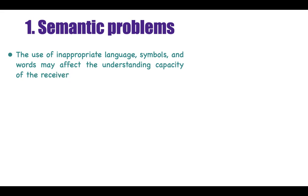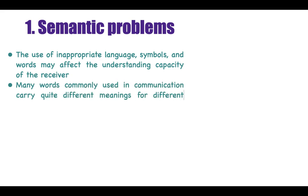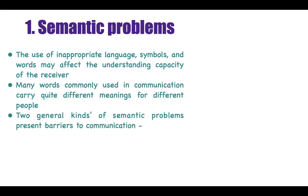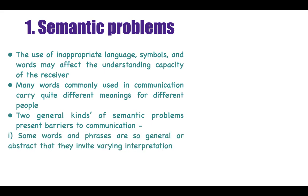The first barrier is semantic problems. A semantic problem occurs when the use of inappropriate language, symbols, or words affects our understanding. Many words in day-to-day communication have different meanings for different people. Semantic problems are of two types. The first type is when some words or phrases are so general or abstract that they can have different interpretations for different people.